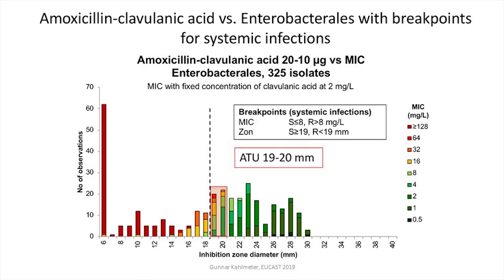This is the same population we looked at earlier for amoxicillin-clavulanic acid and Enterobacteriales, but now with the EUCAST systemic breakpoint of 8 instead of the urinary tract breakpoint of 32. As you can see, moving the breakpoint to the right in the disk diffusion test creates lots of problems — you have overlaps, you have some millimetre zones where you don't really know whether that particular result will represent a highly resistant organism or a susceptible organism — and you can see that the bars have lots of different colours within the same bar.